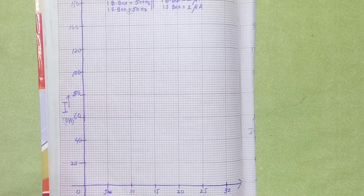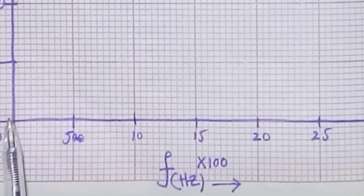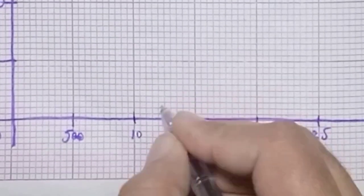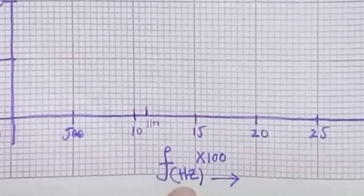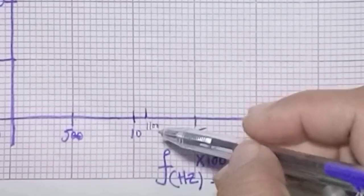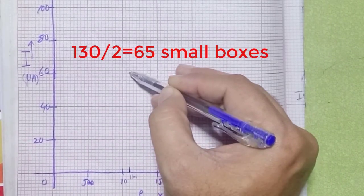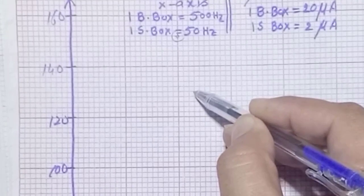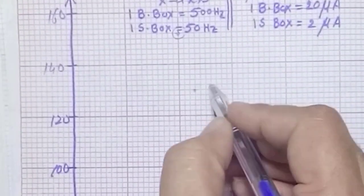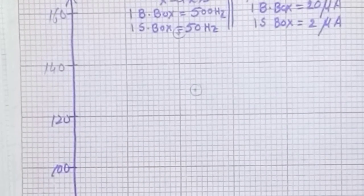In our second observation we have 1100 Hz frequency and the corresponding current was 130 microamperes. Along the x-axis we move 22 boxes: 10, 20, and then 22, representing 1100 Hz. From this point we move 65 small boxes upward to represent 130 microamperes. Drawing a line from this axis gives us 130 microamperes.